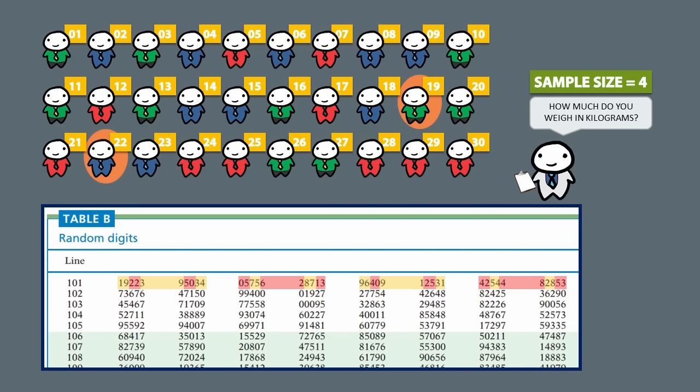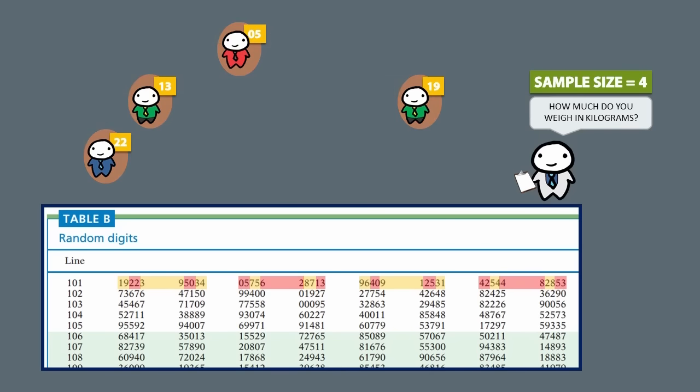We will also ignore 50 and 34, but we will keep number 5. We will also ignore 75, 62 and 87, but we will keep number 13. As a result, these are the people that we would survey.